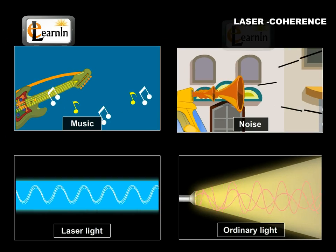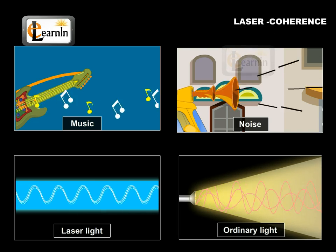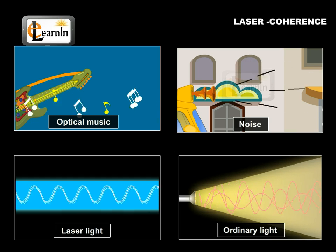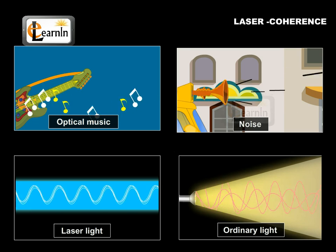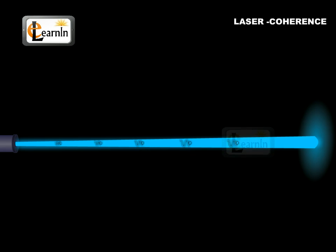Another way of thinking about this is a comparison between music and noise. Lasers with their coherence can be considered as optical music. This is because they have a synchronization. Whereas ordinary light in the same terms becomes optical noise due to its lack of coherence.